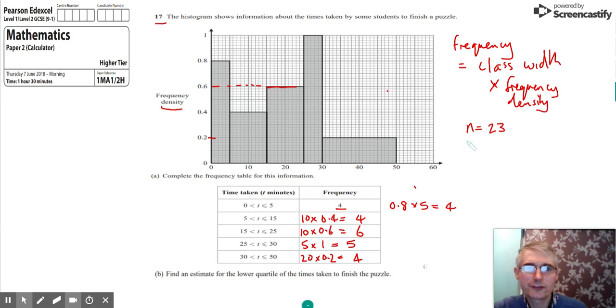To find the position of the lower quartile, not the actual value but the position, what we do is take n and add 1 to it and divide that by 4. And so if we do that, we've got 23 plus 1 over 4, which is 24 over 4, which is 6.